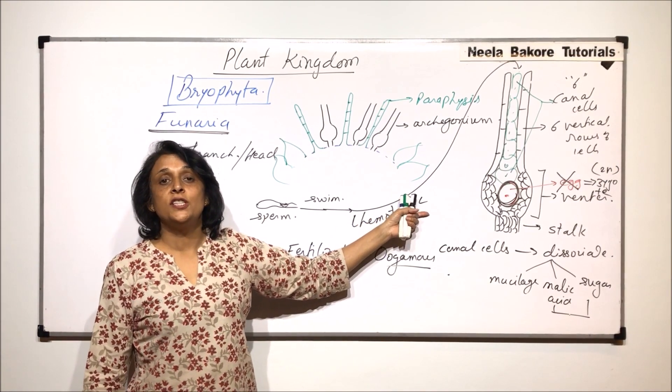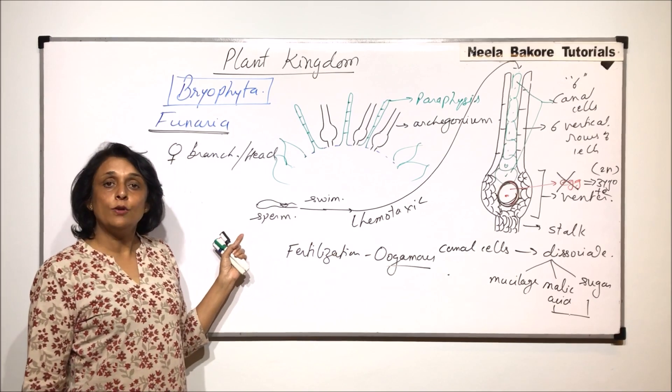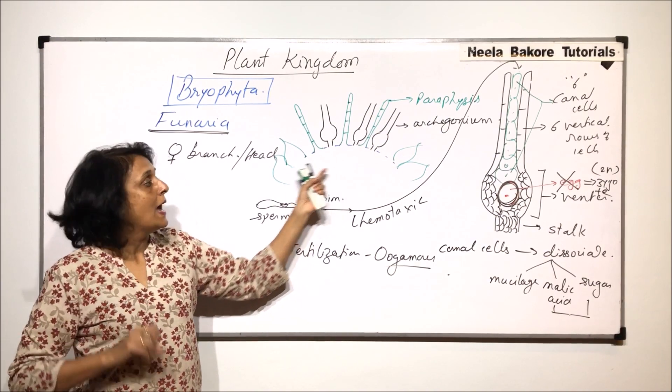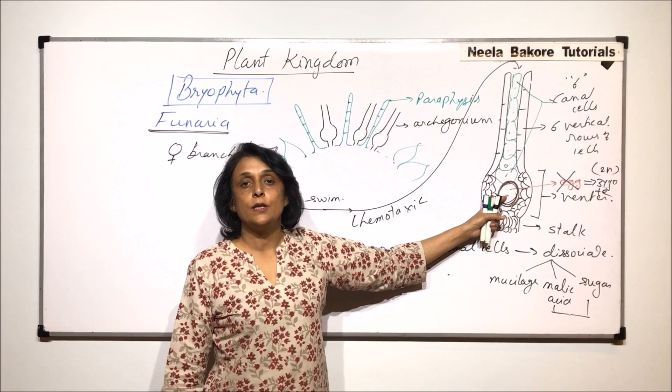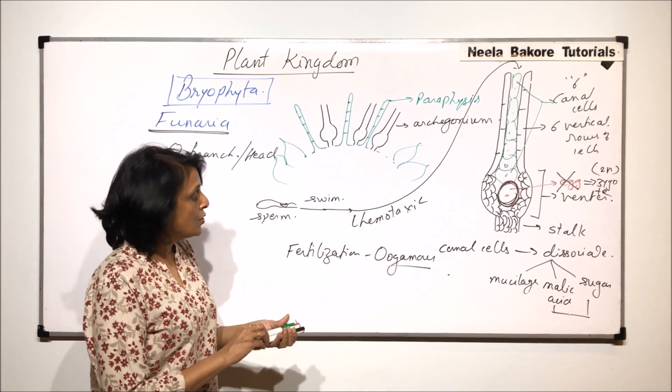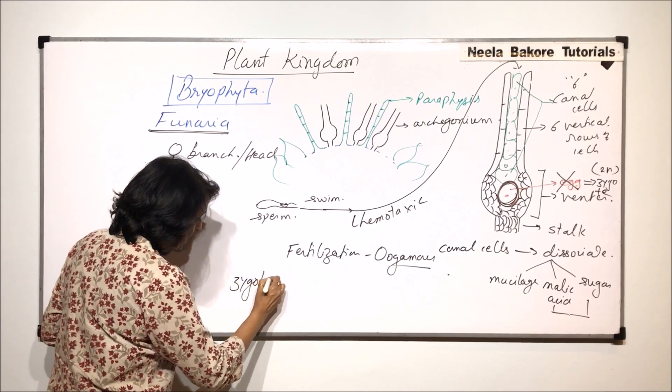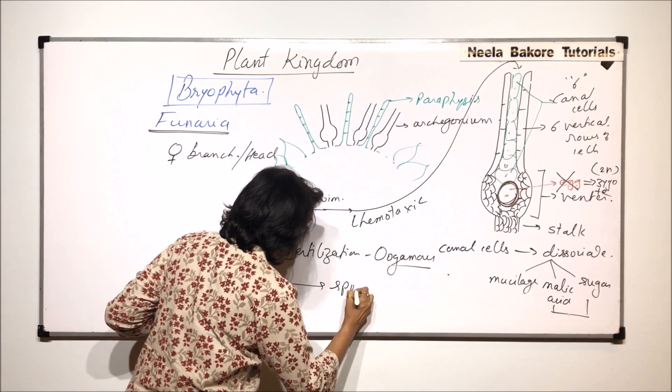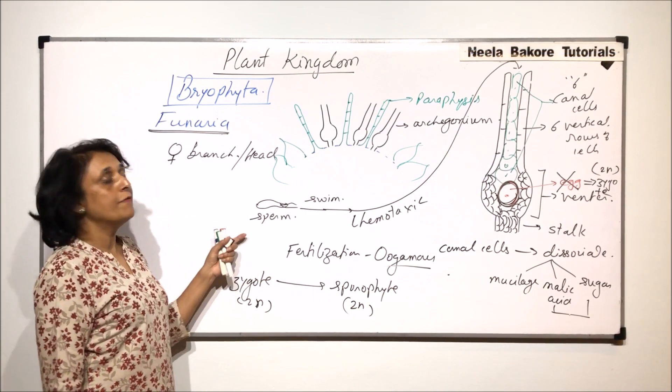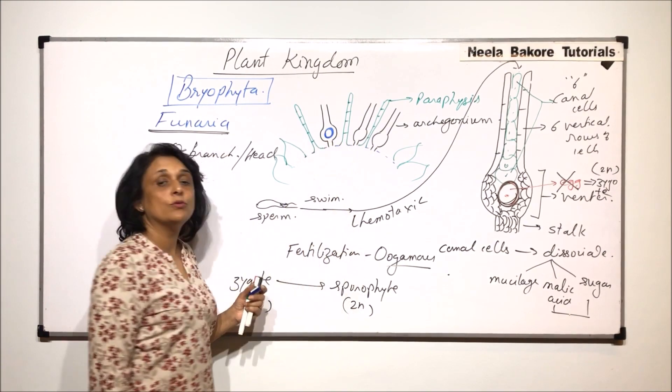And that is why we said that the sporophyte always grows on the female branch. Because egg is on the female branch, fertilization is going to take place on the female branch. Zygote is formed here. And this diploid zygote, this is diploid. This diploid zygote is going to give rise to a sporophyte. The division which takes place in zygote is mitotic. So sporophyte is a diploid structure. So gametophyte on which this male and female branches were there or the sex organs were there, that was a haploid part. After fertilization, zygote gives rise to a diploid sporophyte which would always remain attached to the female branch.